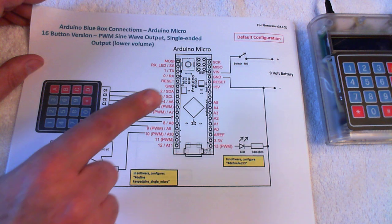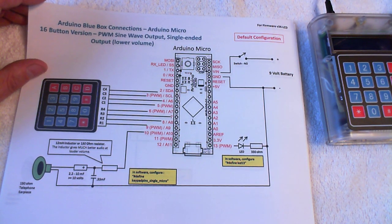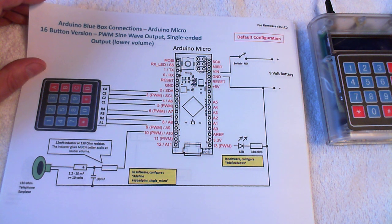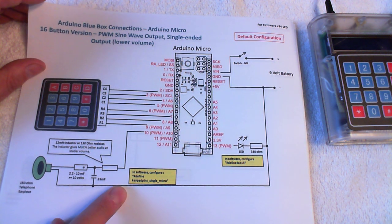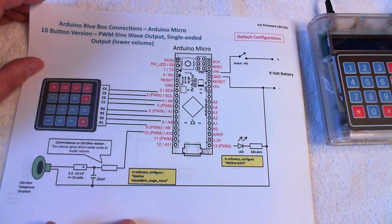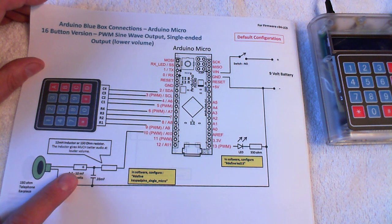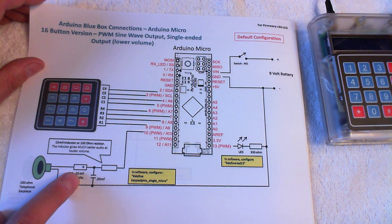This is the default configuration, and in the software you've got to configure two parameters to match the hardware configuration you're using. Those are highlighted by these yellow boxes. In this particular configuration there's actually two output configurations. One uses a single pin for the tone output through the low-pass filter that we talked about and the coupling capacitor. This gives somewhat lower volume. It is called the single-ended mode.